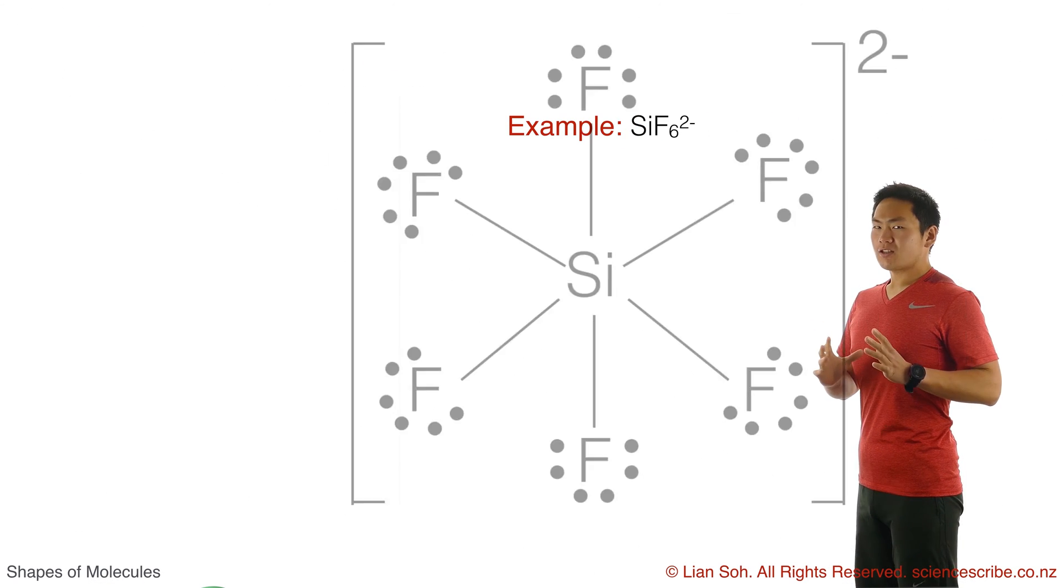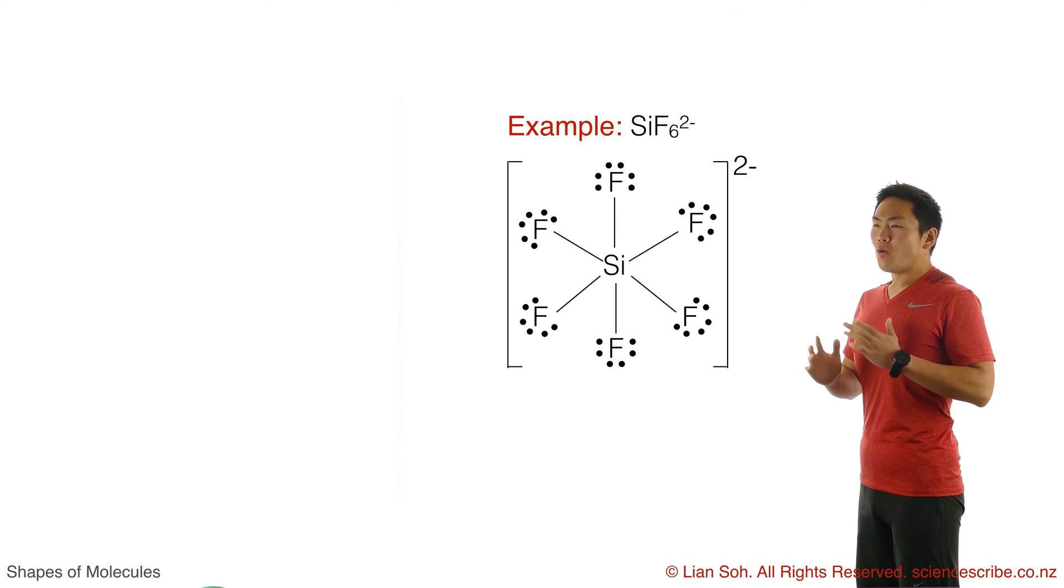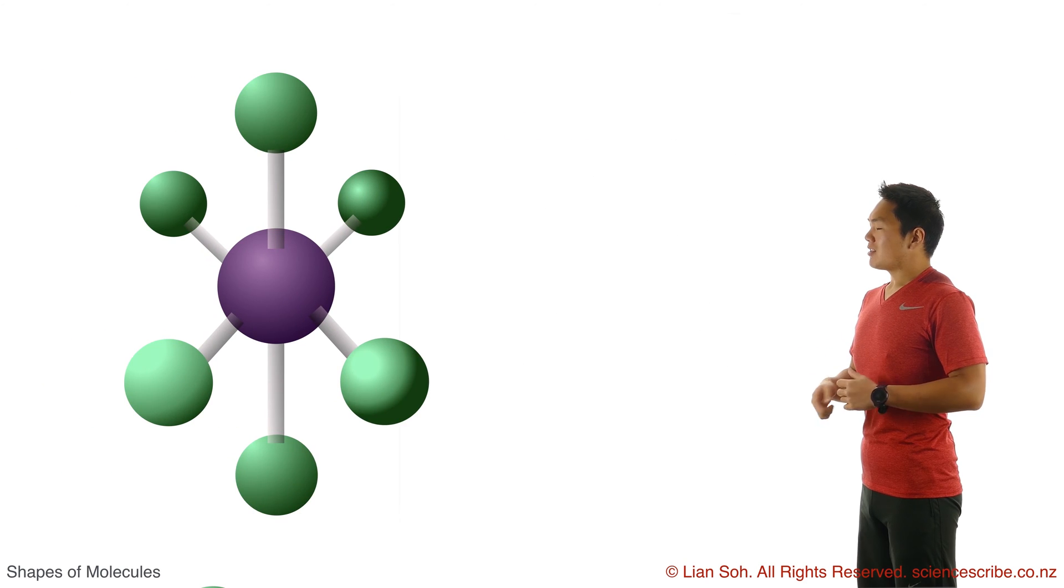Let's say that this time you've got six regions of electron density around your central atom. Six regions is always based on a parent shape of octahedral, so I'm going to go ahead and pop that in. It's called octahedral because it looks like an octahedron.